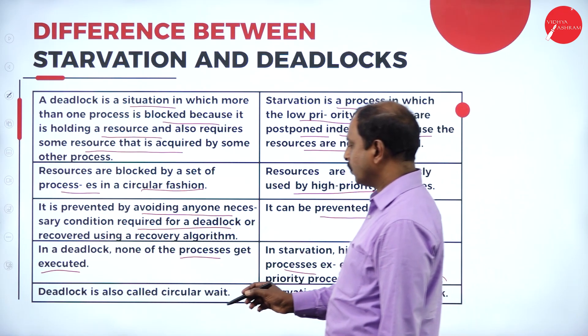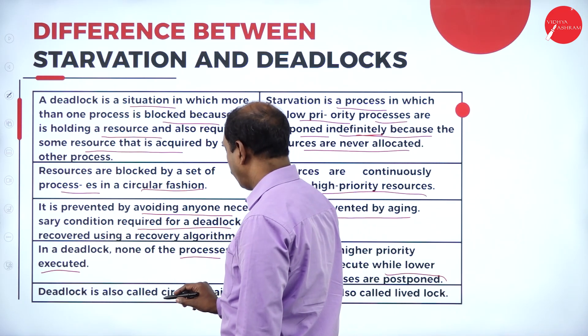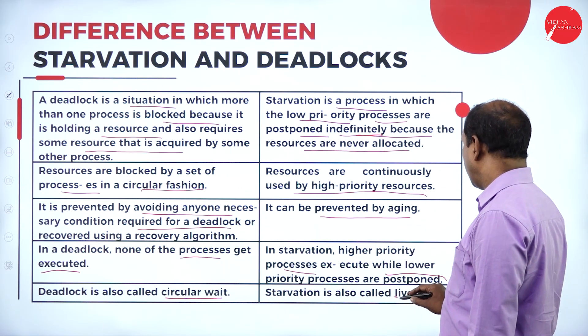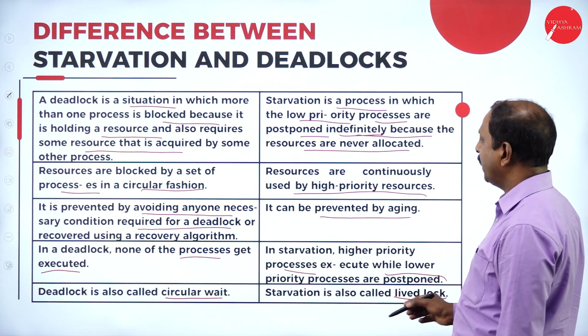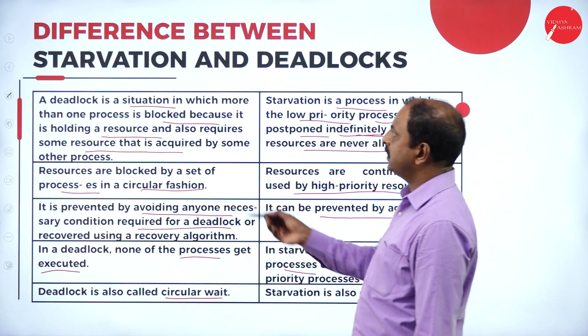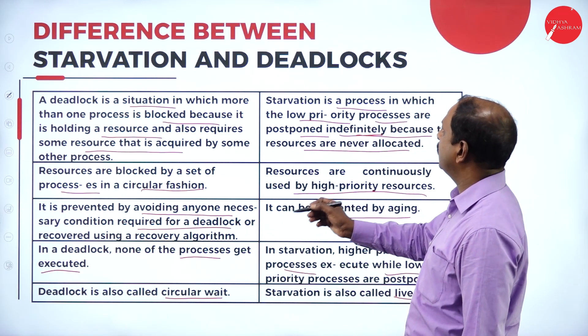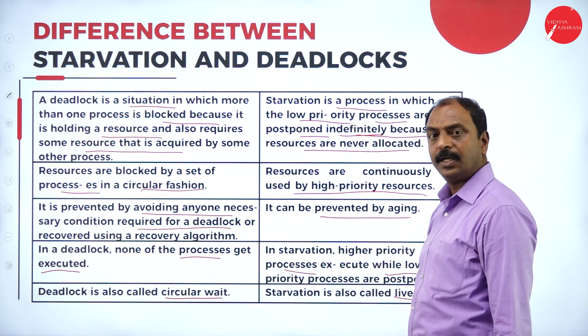Deadlock is also called circular wait, and starvation is also called livelock. This is the key difference between starvation and deadlock.